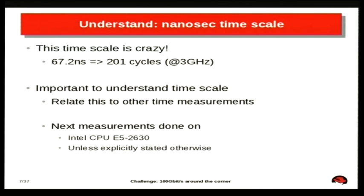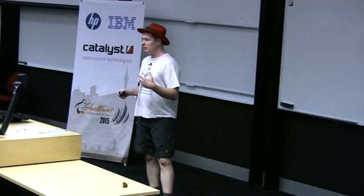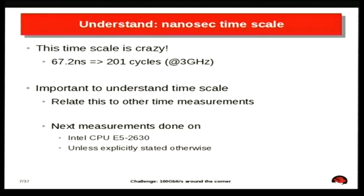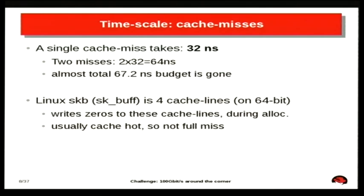I want all of you to understand the crazy time scale we are talking about. We only have around 200 CPU cycles. On this specific CPU I measured that a single cache miss takes 32 nanoseconds, so I can basically only take two cache misses and my entire budget is gone. Cache misses — we don't want those.